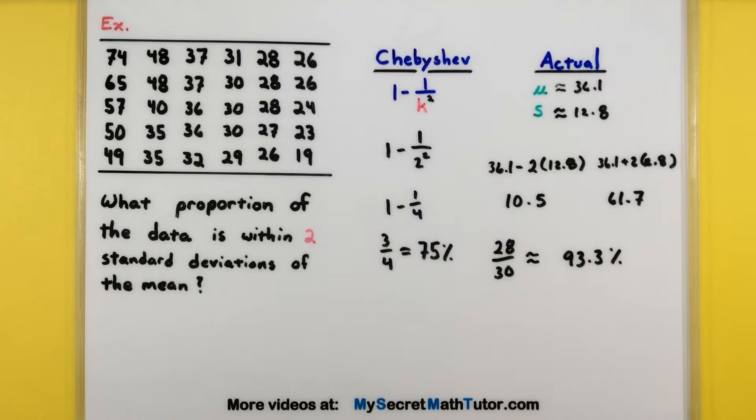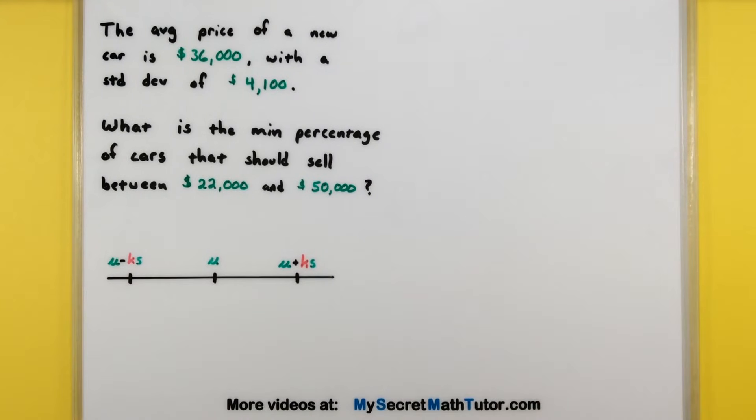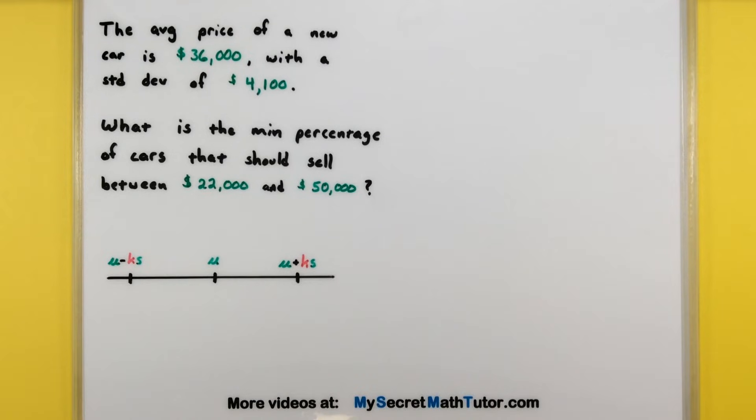All right, let's do this with another example but something a little bit different to see how you might actually use this. So imagine the average price of a new car is $36,000 with a standard deviation of $4,100. We want to know what is the minimum percentage of cars that should sell between $22,000 and $50,000. So here we have a range and we're looking for that percentage.